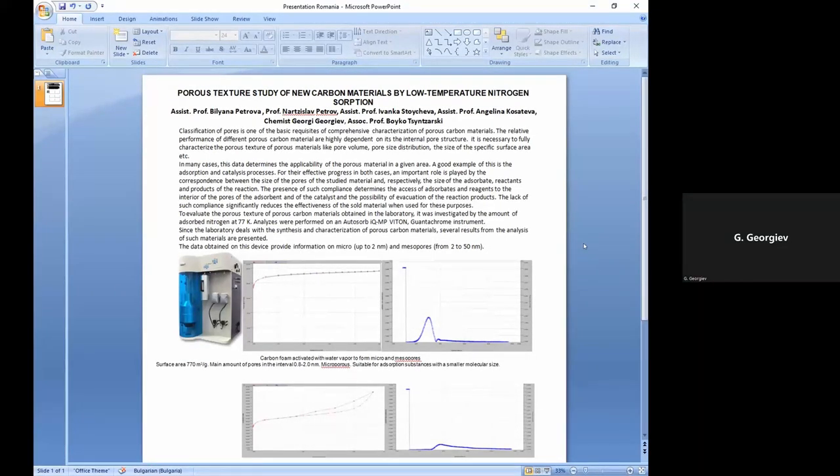Okay, my presentation is about porous texture study of new carbon materials by low temperature nitrogen sorption. The relative performance of different porous carbon materials are highly dependent on its internal porous structure. For better understanding of physical processes taking place within a porous medium, it's necessary to fully characterize the porous texture of carbon materials, like pore volume, pore size distribution, and specific surface area. To evaluate the porous texture of porous carbon materials obtained in our laboratory, it was investigated by the amount of absorbed nitrogen at 77 Kelvin.